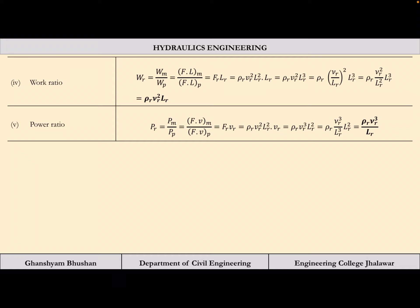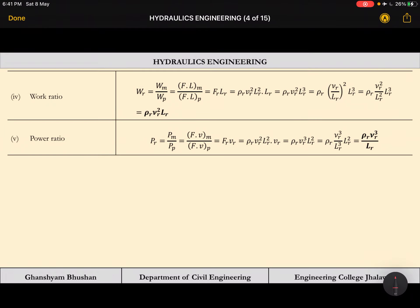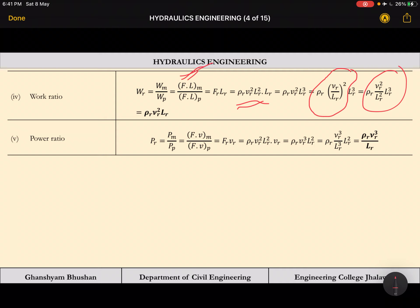Work ratio: work equals force times displacement. Force ratio is rho_r * Vr² * Lr², and displacement scales as Lr, so work ratio Wr = rho_r * Vr² * Lr³. Substituting Vr gives Wr = rho_r * nu_r² * Lr. Power ratio: power equals force times velocity, so just multiply force ratio by Vr and substitute values directly.